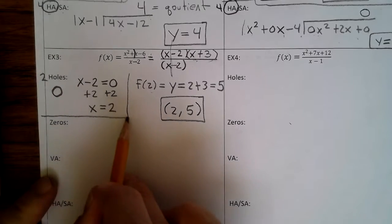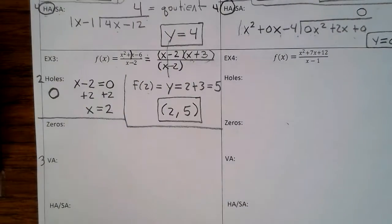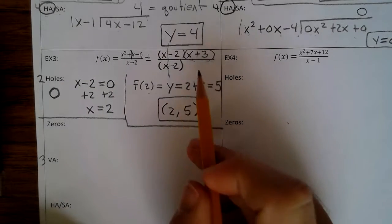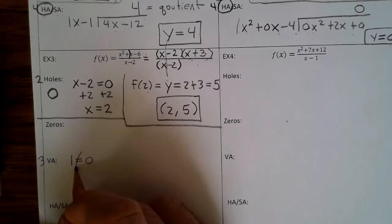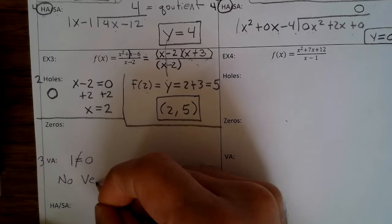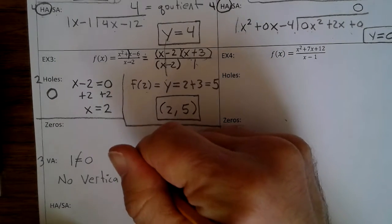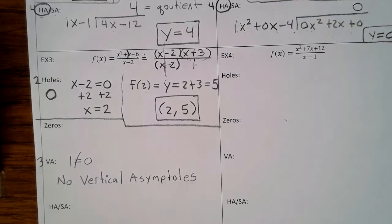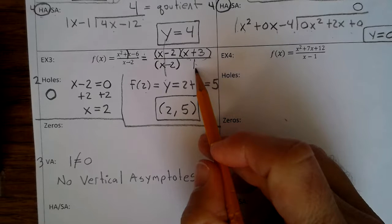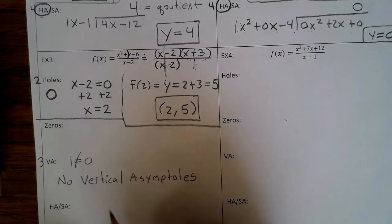Step 3: find the vertical asymptotes by setting the denominator equal to 0. Since x minus 2 became 1, the denominator is now 1. Setting 1 equal to 0 is not true, so there are no vertical asymptotes. Because the denominator is 1, you can't divide 1 into x plus 3 — it's just x plus 3. So there are no horizontal asymptotes or slant asymptotes.